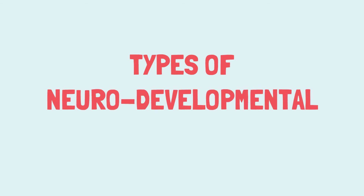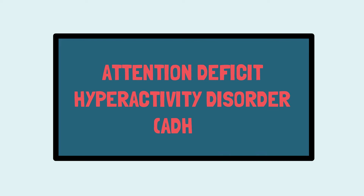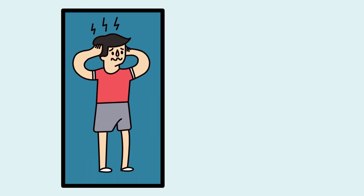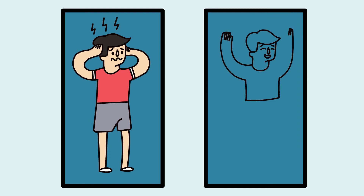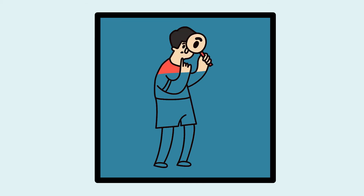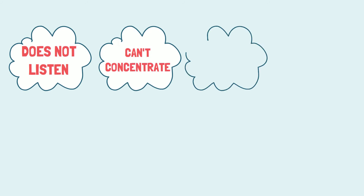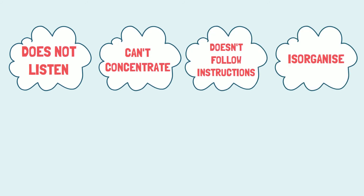Here are the four major types of neurodevelopmental disorders. The first is Attention Deficit Hyperactivity Disorder. The two main features of ADHD are inattention and hyperactivity-impulsivity. Children who are inattentive find it difficult to sustain mental effort during work or play. They have a hard time keeping their minds on any one thing or in following instructions.